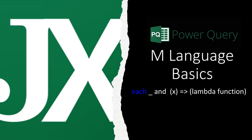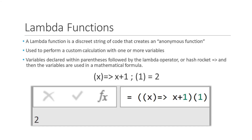In this video, we will cover each underscore and lambda expression notation. A lambda function is a discrete string of code that creates what's called an anonymous function that can be used to perform a custom calculation.